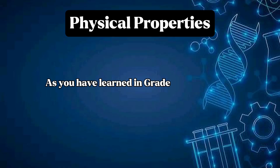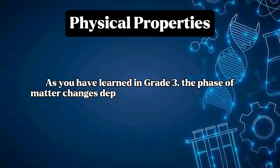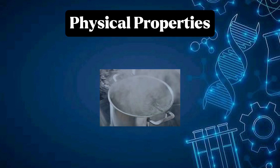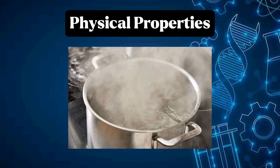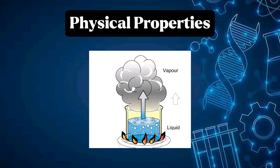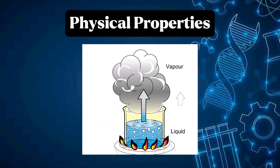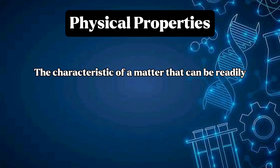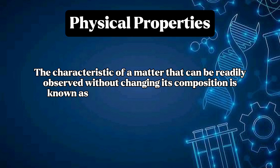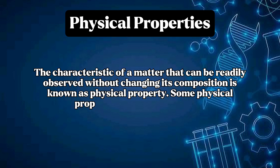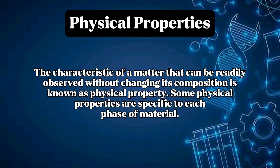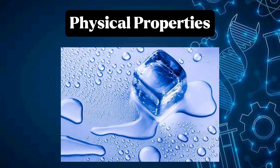As you have learned in Grade 3, the phase of matter changes depending on the temperature. For example, when water starts to boil, steam or vapor is produced. Although the appearance of water was changed, the water vapor's composition is still similar to that of water in liquid form. This shows how water transforms from one phase to another without changing its composition. The characteristic of matter that can be readily observed without changing its composition is known as physical property.